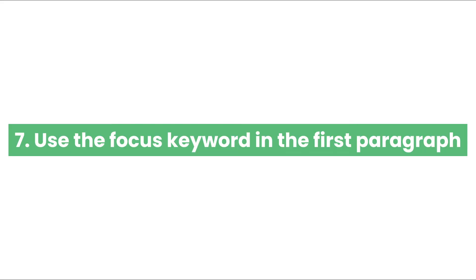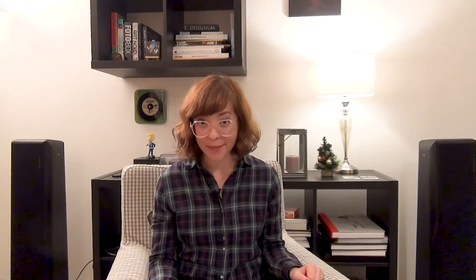Tip 7: Use the focus keyword in the first paragraph, but do so naturally. Ideally, you want your focus keyword to appear within the first 100 words. Tip 8: Include internal links. Always link to other pages on your website that are relevant to your content. When linking, use anchor text. For example, if you want to link to an article with a focus keyword 'books for writers,' use that phrase as your anchor text.